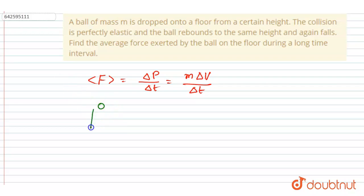After traveling through h height it reaches here. So initial velocity is zero, so final velocity you can calculate by using the third equation of motion.